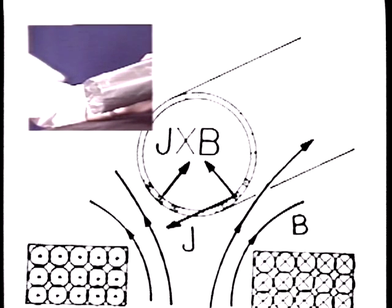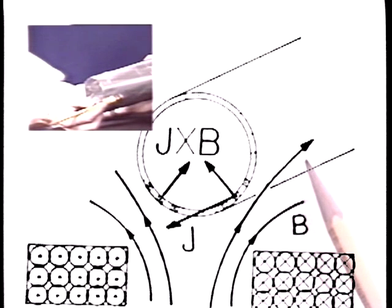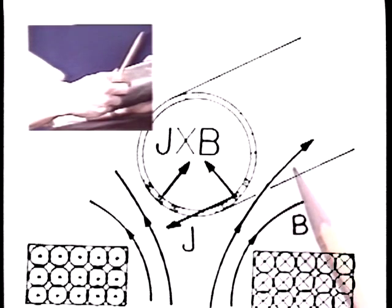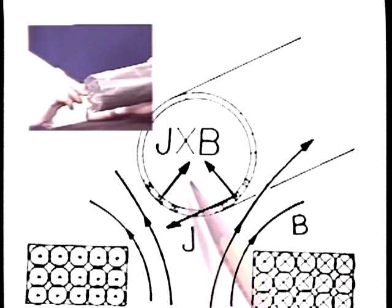The cross product between the axial current with the tangential component of magnetic field then gives the J cross B magnetic force as radially inwards. This tends to crush the aluminum foil cylinder.